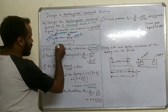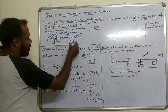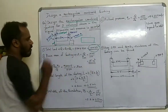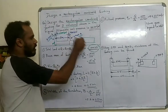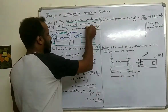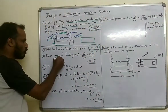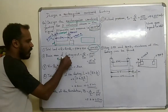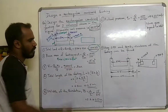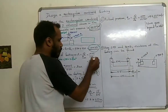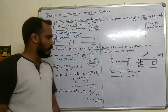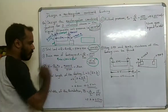The second step is to calculate the base area of the footing. The allowable soil pressure is 100 kN per m². Substituting, the base area of the footing is equal to Q divided by the allowable soil pressure, giving us 15 m².